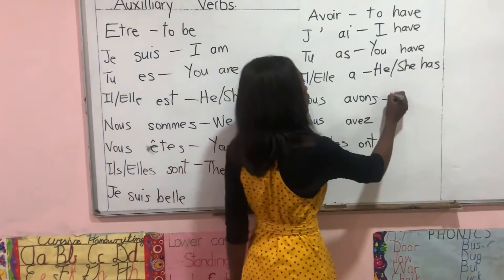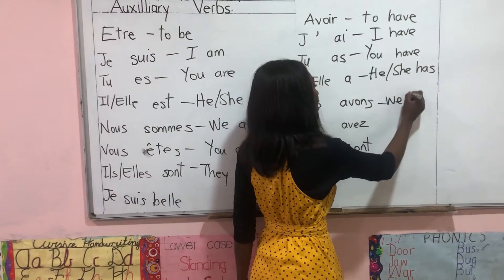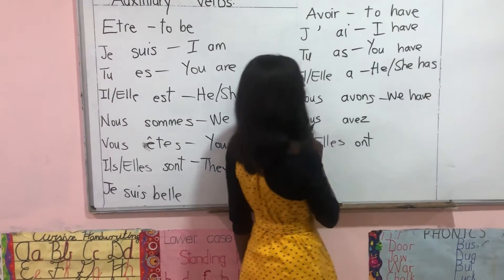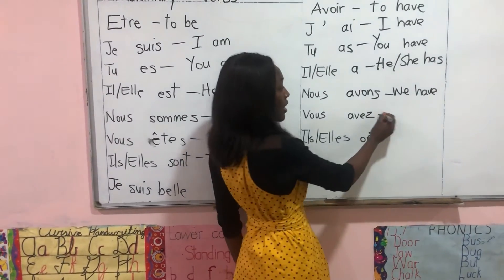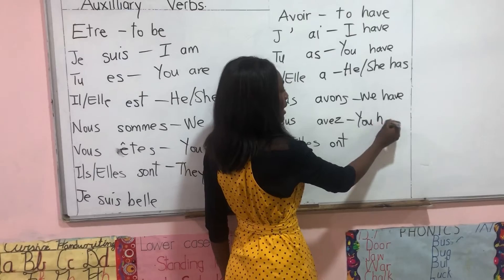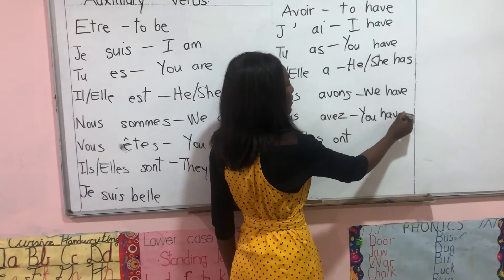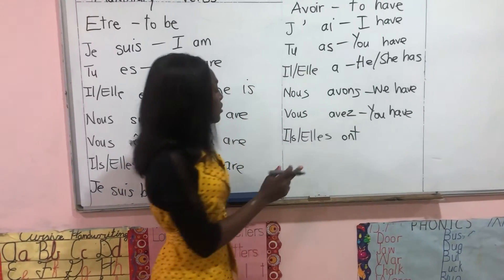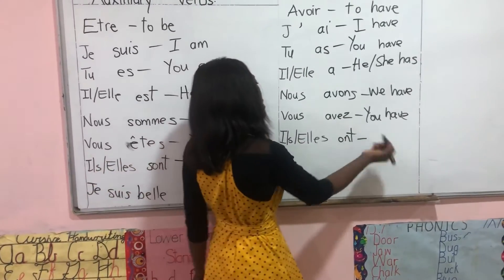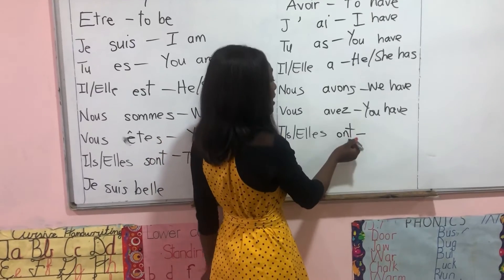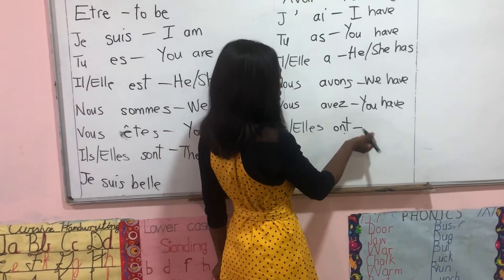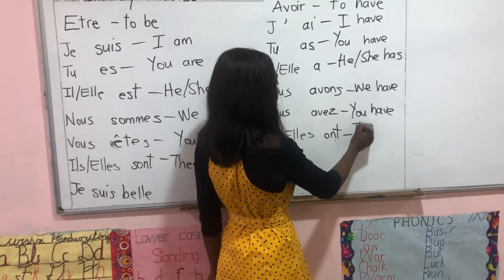Nous avons — we have. Vous avez — you have. And ils ont, elles ont — the T is silent. So this means they have.